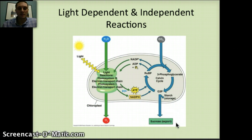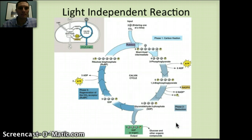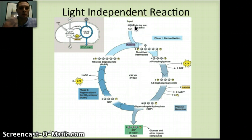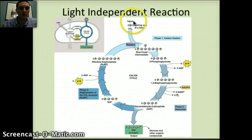This process is called the Calvin cycle and we're going to look at it in a little more detail. The light-independent reactions start with CO2. CO2 is what drives this whole process — CO2 molecules enter this cycle one at a time, but three CO2 molecules enter overall. This process is divided into three different stages.